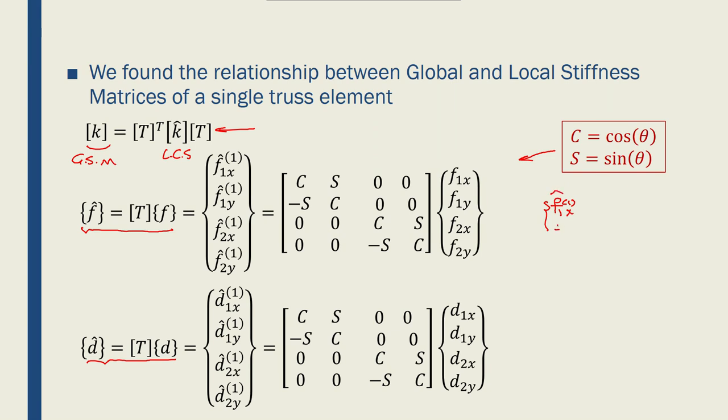f1y1 is equal to cos sin minus sin cos times f1x and f1y. And the same is true for the second node.